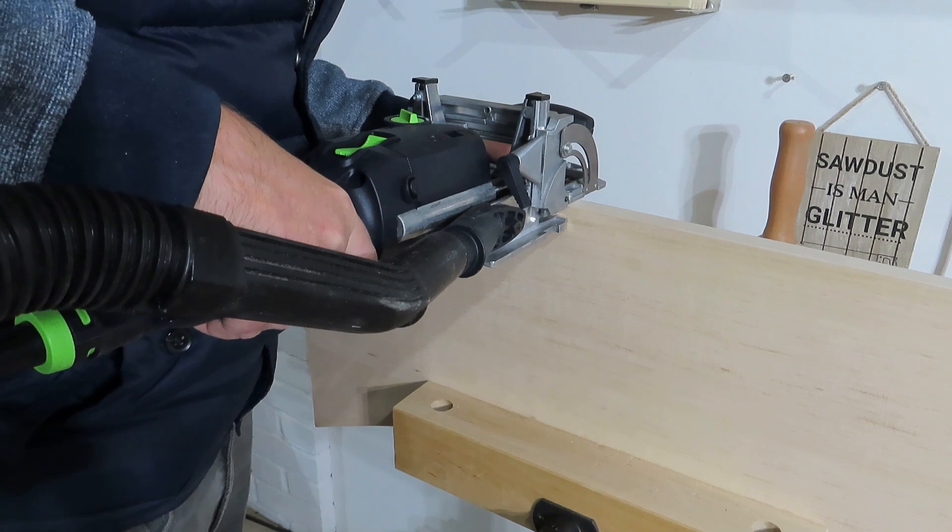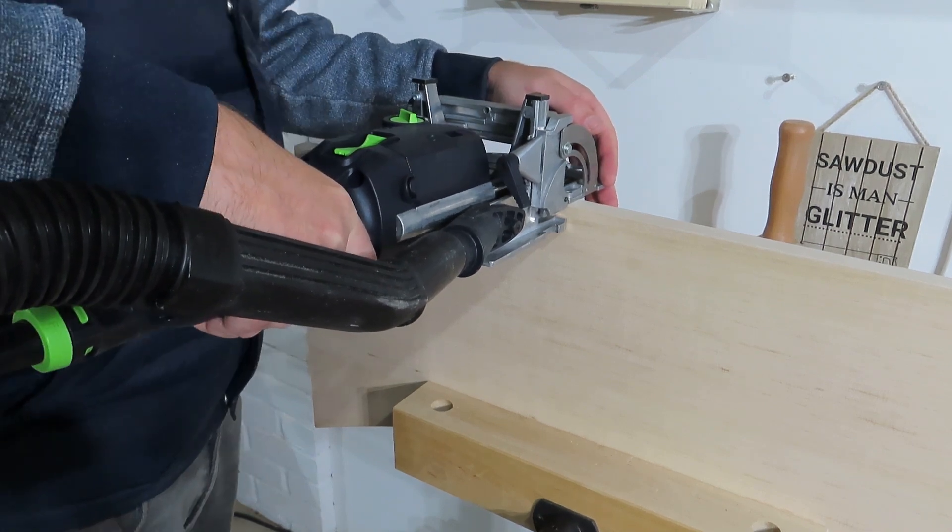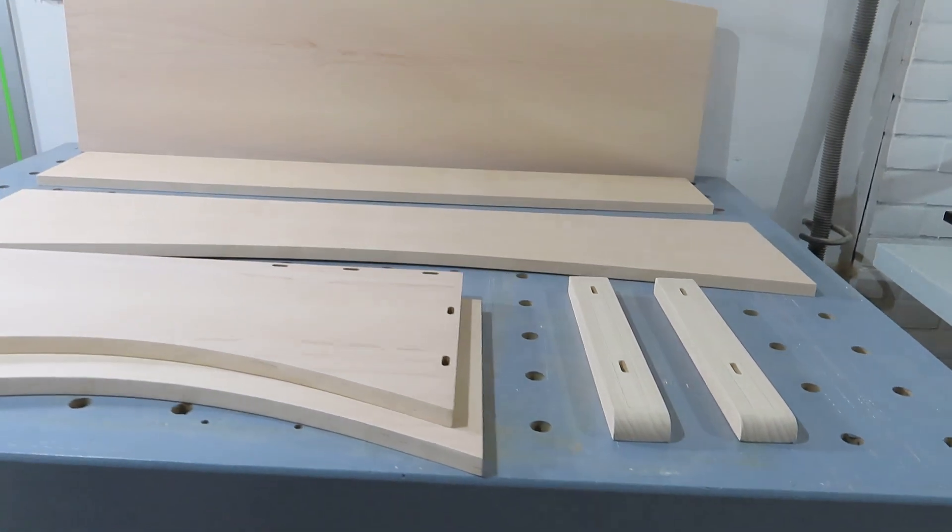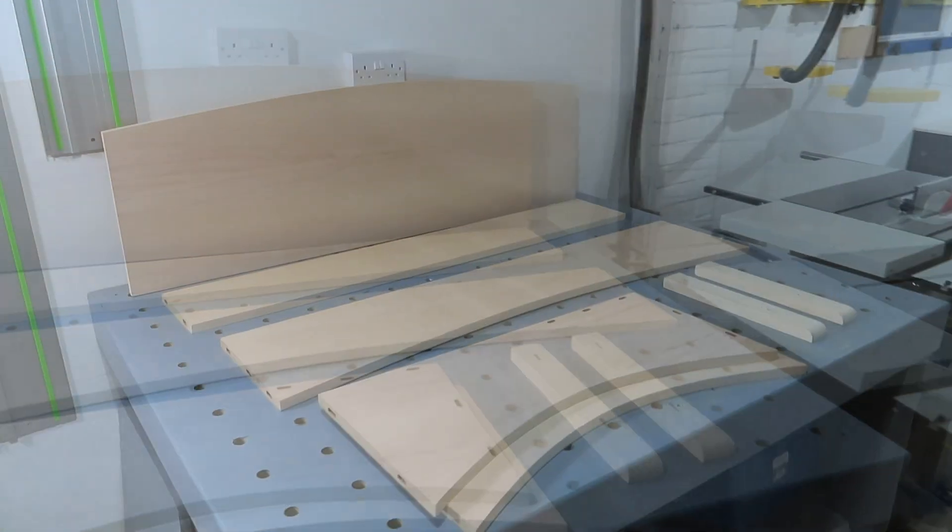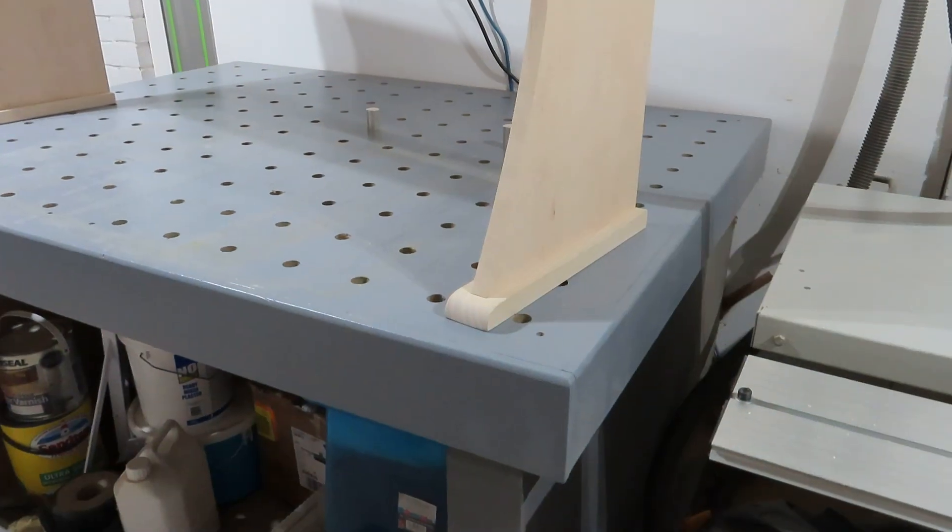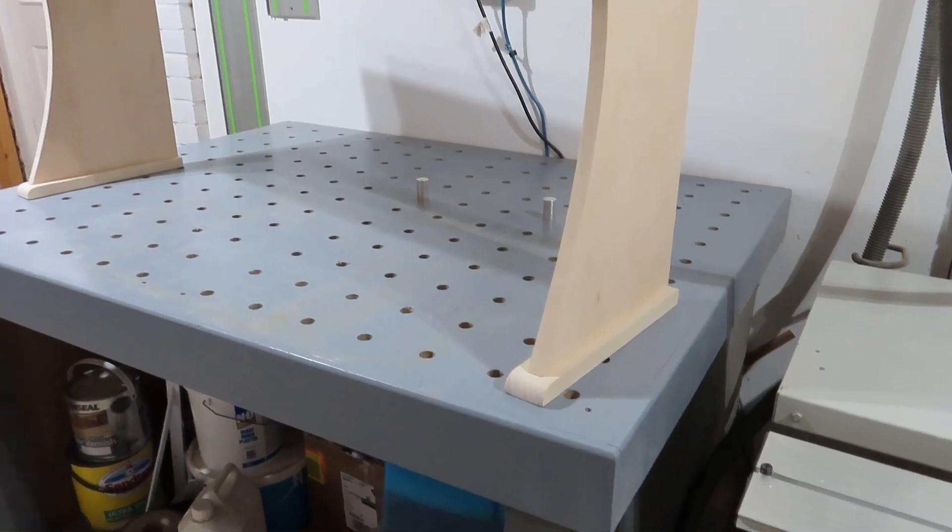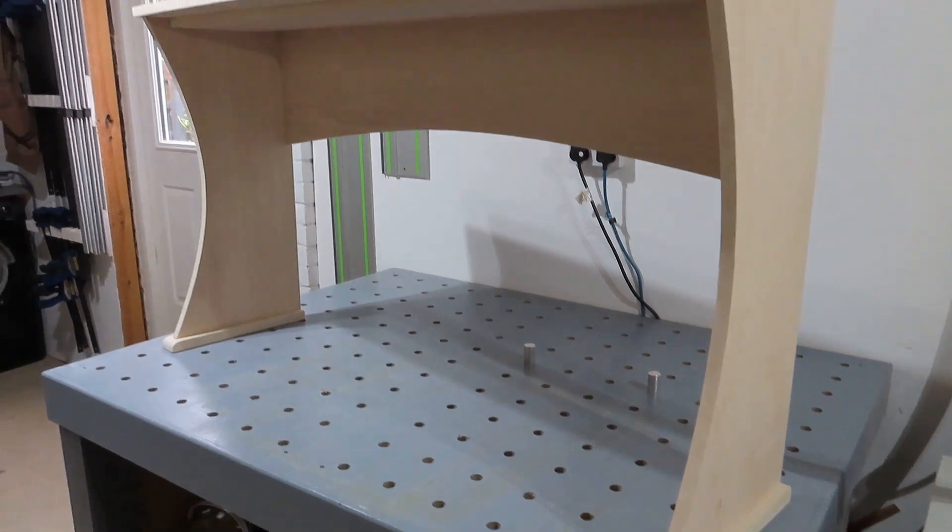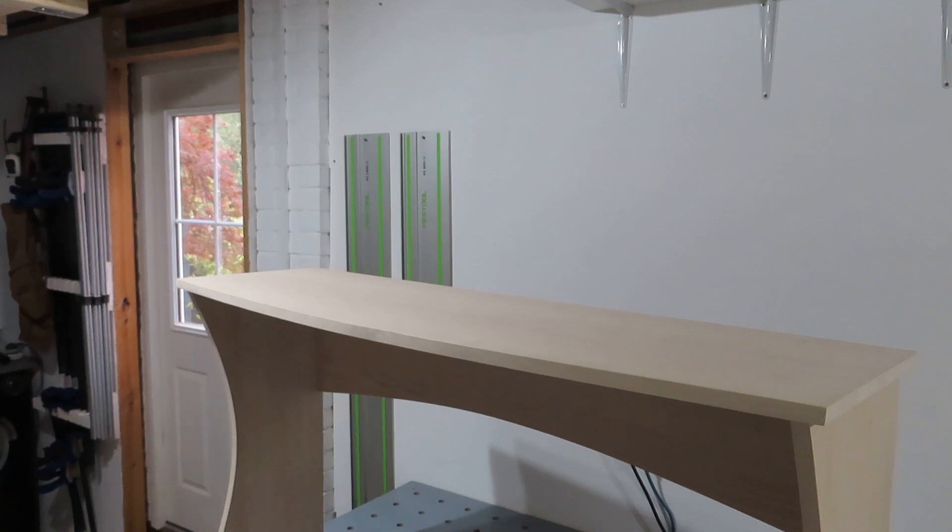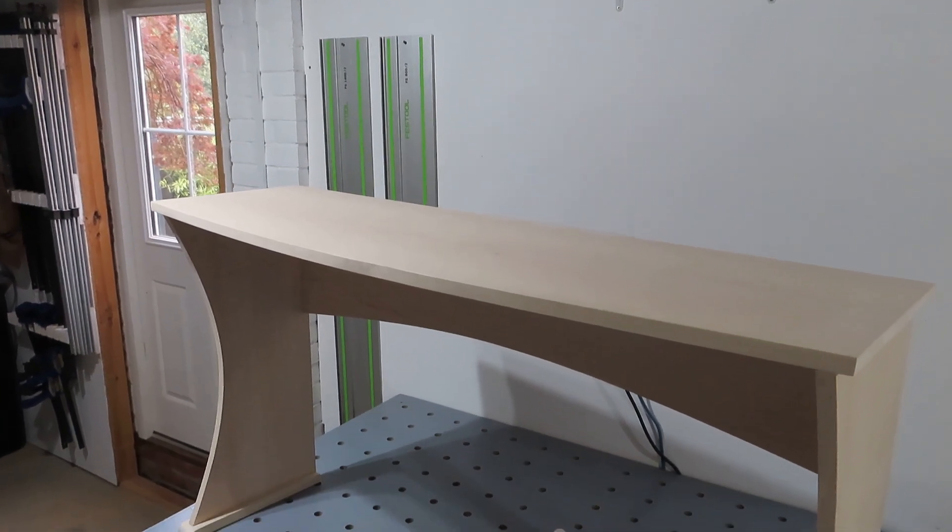I used the domino to get all the joinery sorted out, and that was pretty much it. This is quite an unusual size desk - the space it needed to go in was 1.3 meters wide but only 400mm deep. At this stage, I decided to dry fit everything together just to check the proportions looked right and it was all going to work out okay. Time to chuck some paint and varnish on it.